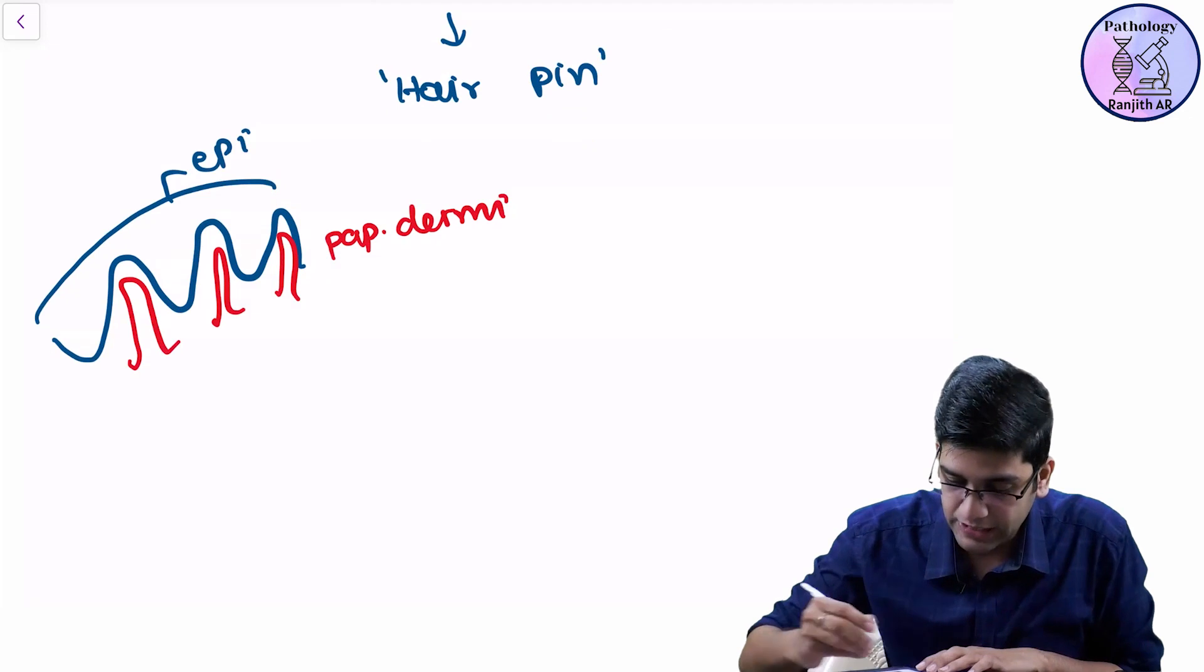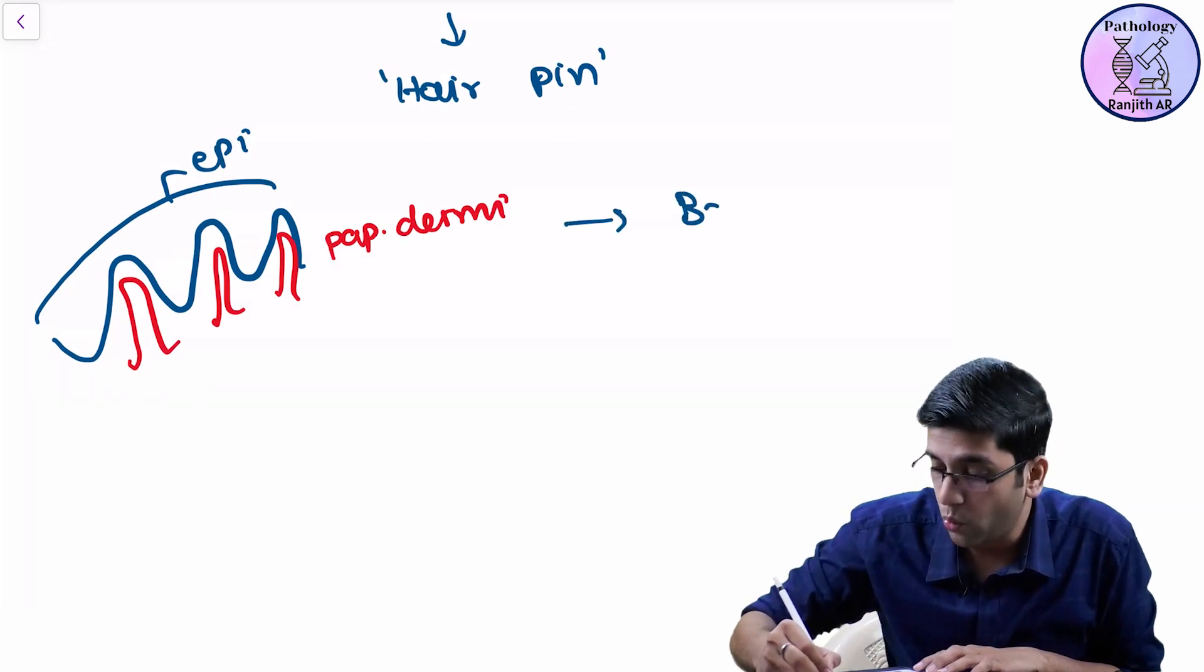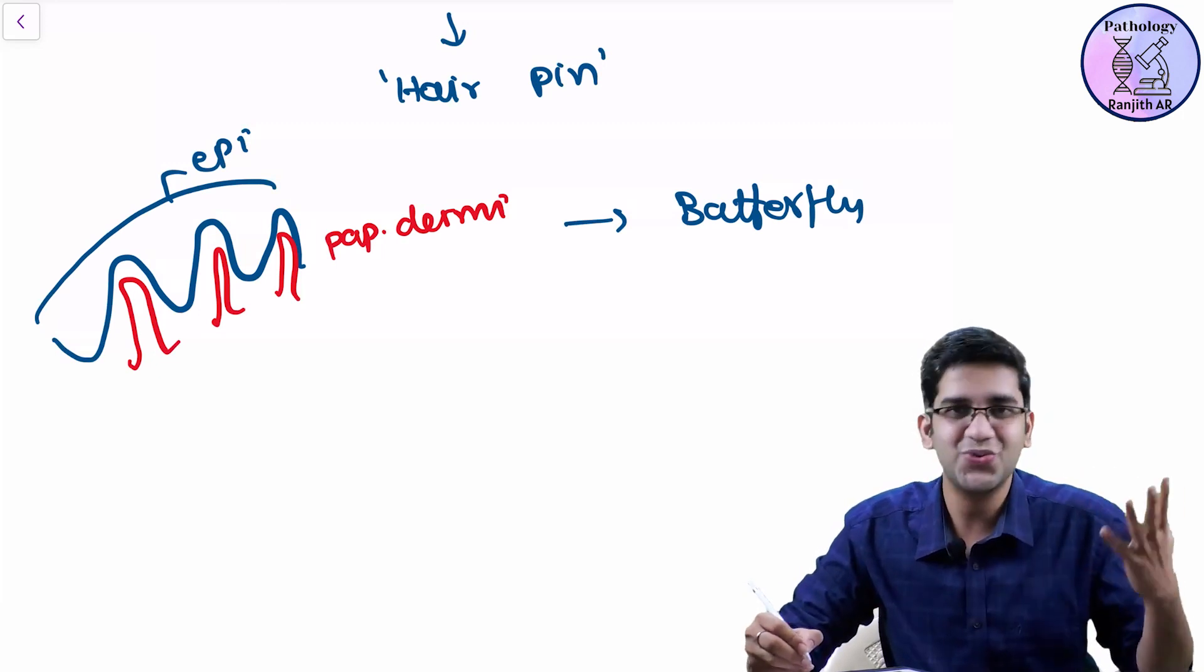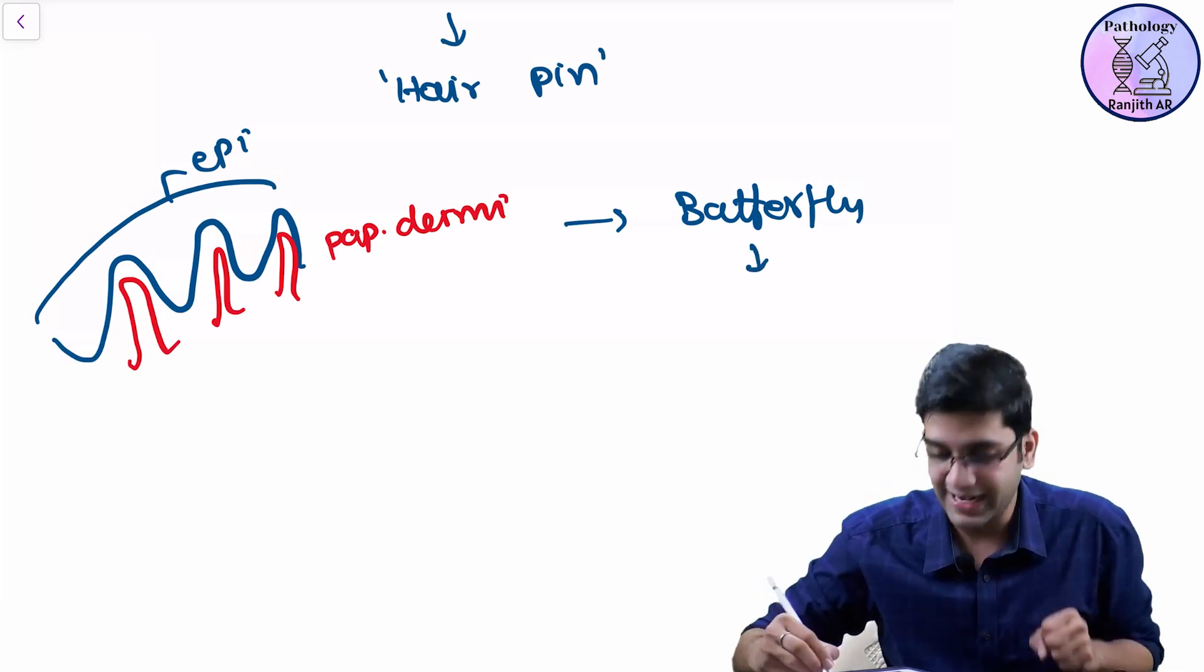Vasodilatation. So why your malar and discoid rash, why my butterfly area is amazing. It's the fat.